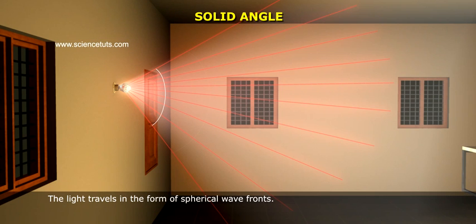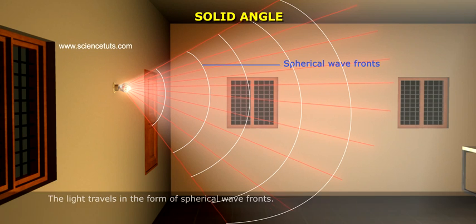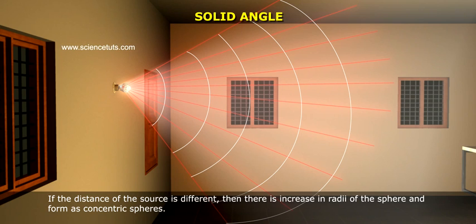Solid angle. In our earlier session we have learned about luminous flux. Now let us learn about solid angle, one of the important terms. Have you ever observed light? The light travels in the form of spherical wavefronts. If the distance of the source is different, then there are increasing radii of the sphere and they form concentric spheres.